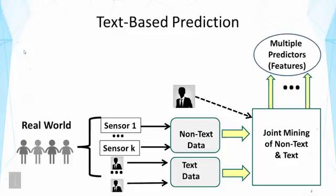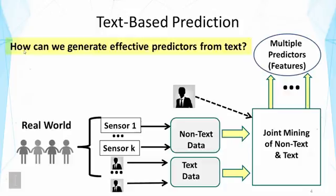From a text mining perspective, we're interested in text-based prediction. Sometimes text alone can make predictions — most useful for prediction about human behavior, preferences, or opinions. But in general, text data will be combined with non-text data. The key questions are: how can we design effective predictors, and how do we generate them from text? Topic mining, for example, can generate topic-based indicators or predictors that can be further fed into a predictive model.